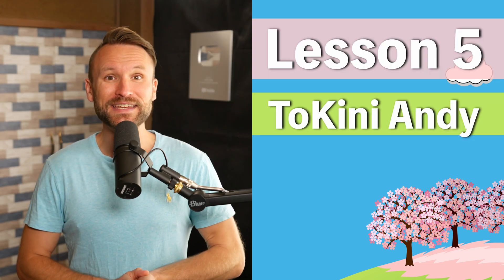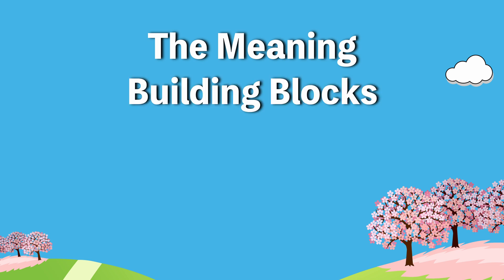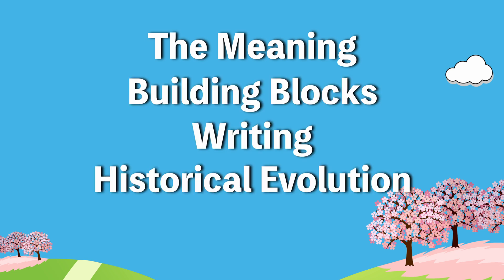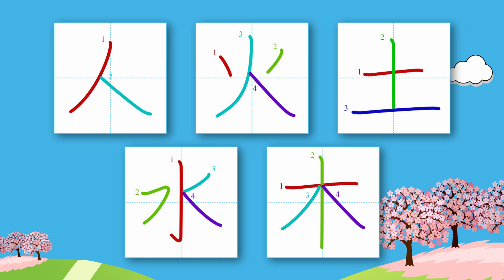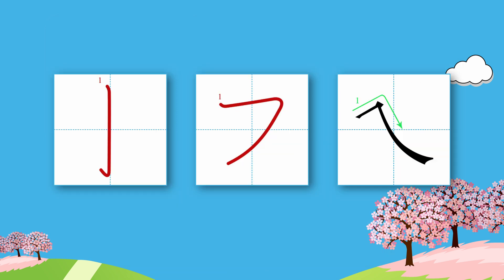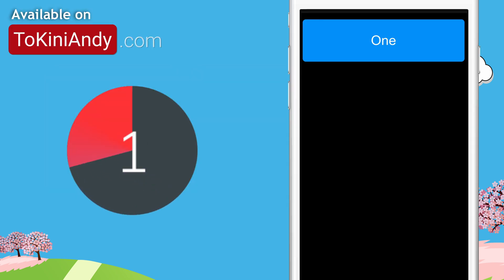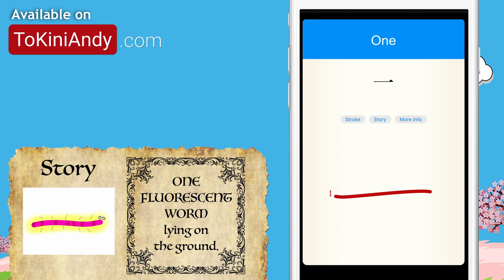Welcome to the fifth Tokini Andi kanji lesson. Today we're going to cover the meaning, building blocks, writing, historical evolution where applicable, and a story to memorize each of the following kanji. We'll also learn the parts and radicals needed for those kanji. Today there are three new parts I'll teach, plus a fourth that I'll briefly cover during our second kanji. Stick around to the end of the lesson where we'll be doing a quick quiz to help everything stick.